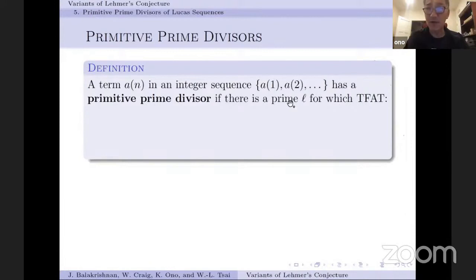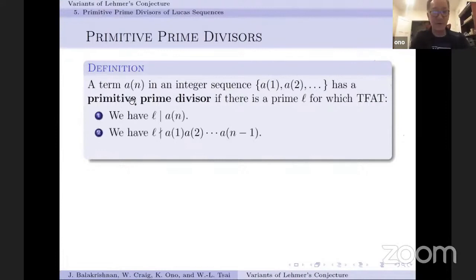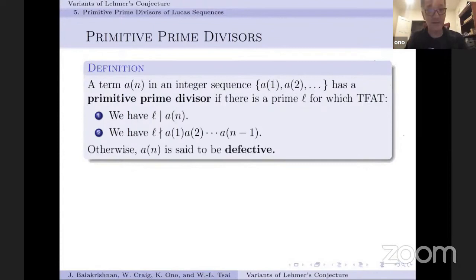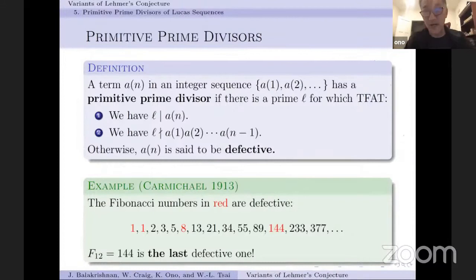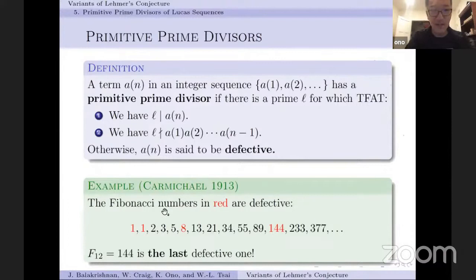Primitive prime divisors: suppose I give you an integer sequence A(1), A(2), and so on. We say the nth term has a primitive prime divisor if there's a prime L that divides A(n) but doesn't divide any of the previous terms. Otherwise we call A(n) a defective term. This entire project started when I was moving from Emory to Virginia, cleaning out my office, and came across an old paper quoting this theorem of Carmichael. The theorem of Carmichael states that among the Fibonacci numbers, the last defective term is 144.